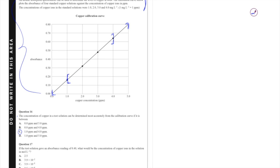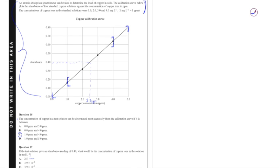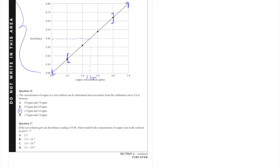Question 17. They threw in a lot of little tricks and I'm going to walk you through it step by step. If the test solution gave an absorbance reading of 0.4, sketching that along here comes down to roughly 2.5 ppm and at this stage many students circled response A. However they didn't read the full question—it asks what would be the concentration of copper ions in moles per liter. They put that in there to trip you up.